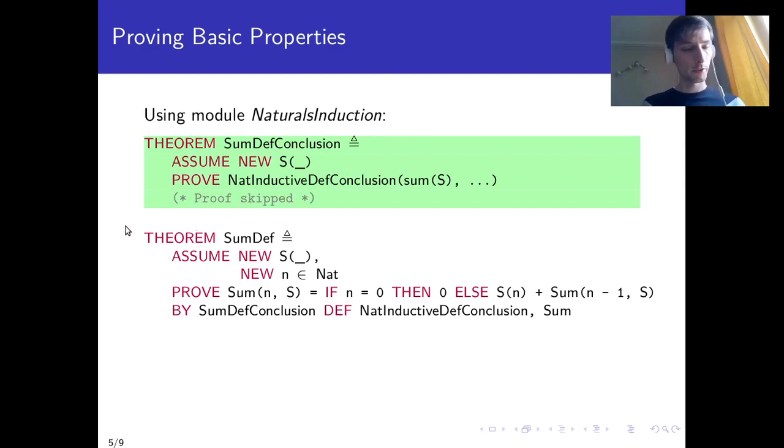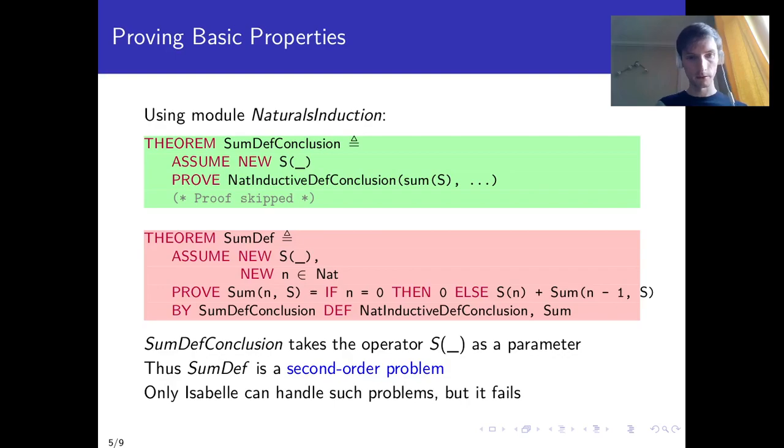Now the theorem I'm interested in is SUMDEF. SUMDEF states that the sum operator for argument n and s is defined by the recursive definition that I intended. So this is a statement that I would like to use instead of the actual definition of the operator whenever I need to use some definition. In principle SUMDEF is just a reformulation of SUMDEF conclusion. So its proof is just one line here and it works by invoking SUMDEF conclusion as a lemma and expands SUMDEF definition. Now unfortunately this proof fails.